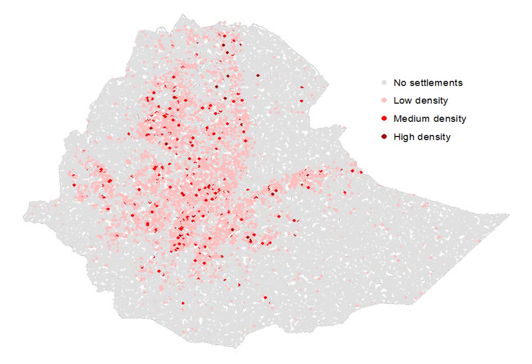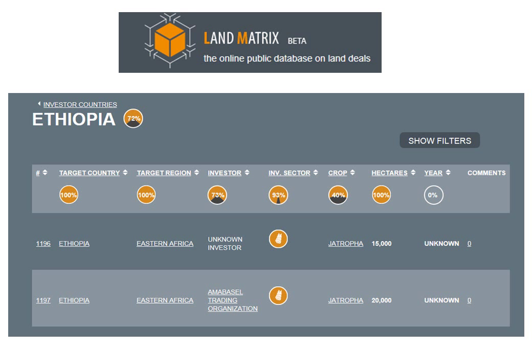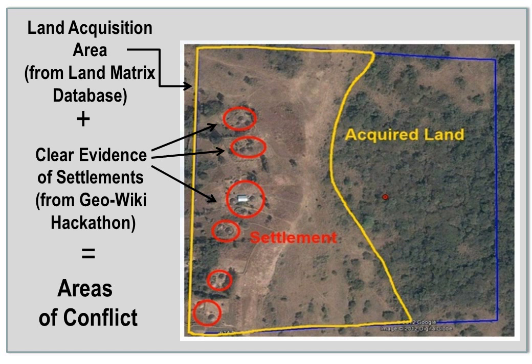Here is what the crowd-sourced map of settlements looks like. All of this data can be freely downloaded and used in other applications. Our next step is to work with the Land Matrix Project, which contains a database of land acquisitions. The actual locations will shortly become open source. We will then overlay the crowd-sourced map with these areas of land acquisition, identify clear areas of conflict, and determine where existing populations may be affected, and raise awareness of land grabbing.